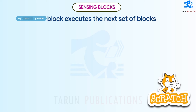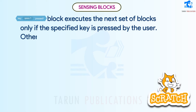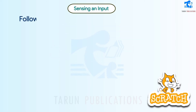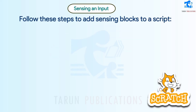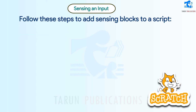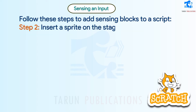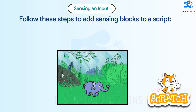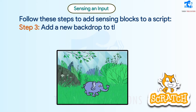A block executes the next set of blocks only if the specified key is pressed by the user; otherwise it will execute a different set of blocks. To add sensing blocks to a script: Step 1 - Click on the Sensing Block category in the Code tab. Step 2 - Insert a sprite on the stage. We have added Elephant. Delete the default cat sprite.